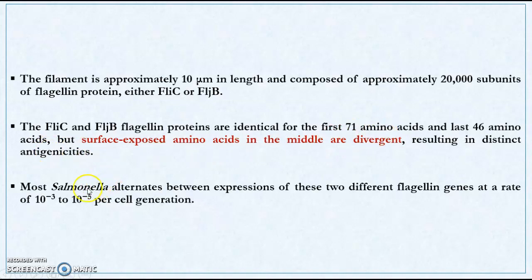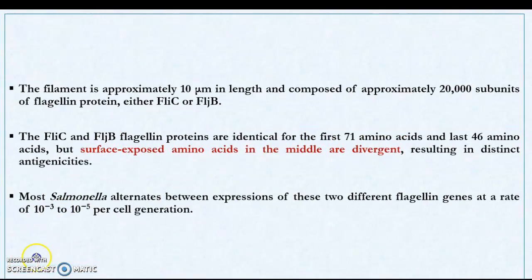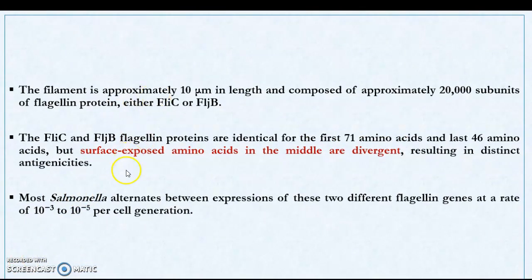Most Salmonella species alternate between the expression of these two different flagellin genes — either flagellin C or flagellin B — at a rate of 10⁻³ to 10⁻⁵ per cell generation. So this switching does not occur very frequently.